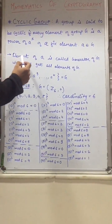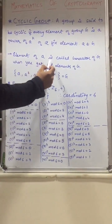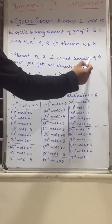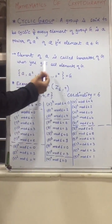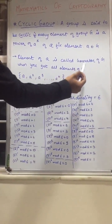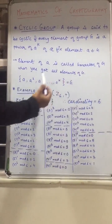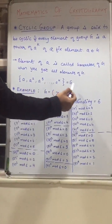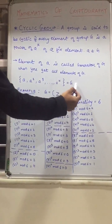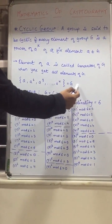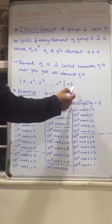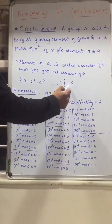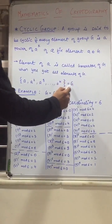An element a is called a generator of G when you get all the elements of G, and this is a formula to calculate the generator. In the next example, I will teach you how to get the generator and the subgroups.